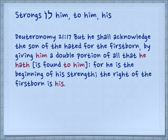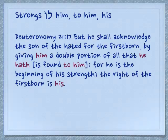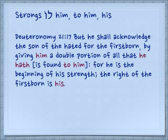Deuteronomy 21.17: 'But he shall acknowledge the son of the hated for the firstborn by giving him — to him — a double portion of all that he hath.' This is an idiomatic phrase that says all that is found to him — all that belongs to him — lo. 'For he is the beginning of his strength, and the right of the firstborn is his.' The preposition lamed not only means 'to a person,' but it also signifies ownership. You see at the beginning of many of the Psalms: le David — a Psalm of David, it belongs to him.